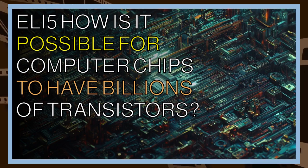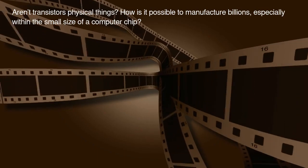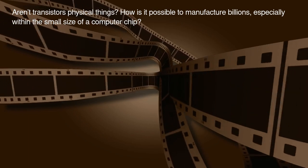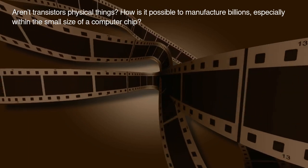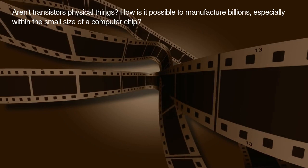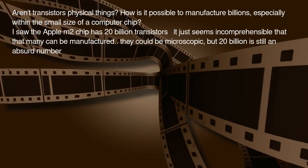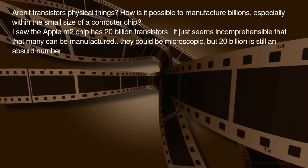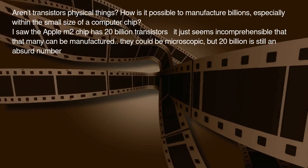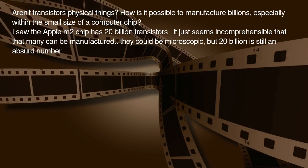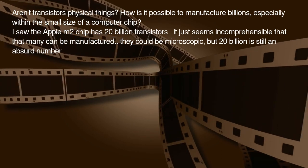Explain like I'm 5: how is it possible for computer chips to have billions of transistors? Aren't transistors physical things? How is it possible to manufacture billions, especially within the small size of a computer chip? The Apple M2 chip has 20 billion transistors — it just seems incomprehensible that that many can be manufactured. They could be microscopic, but 20 billion is still an absurd number.